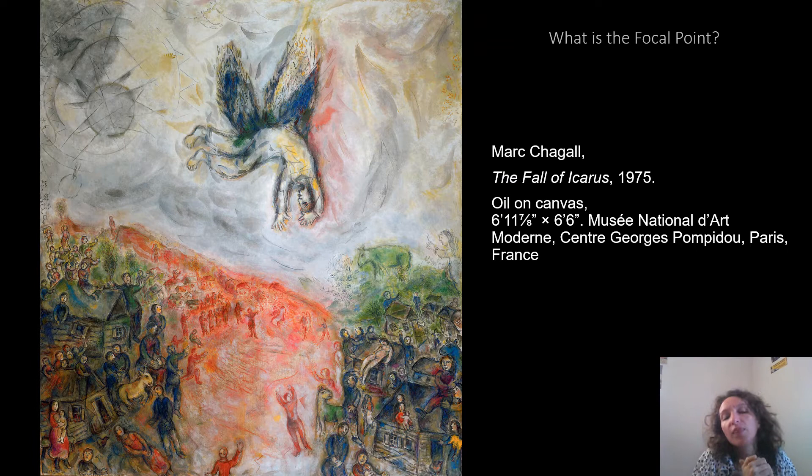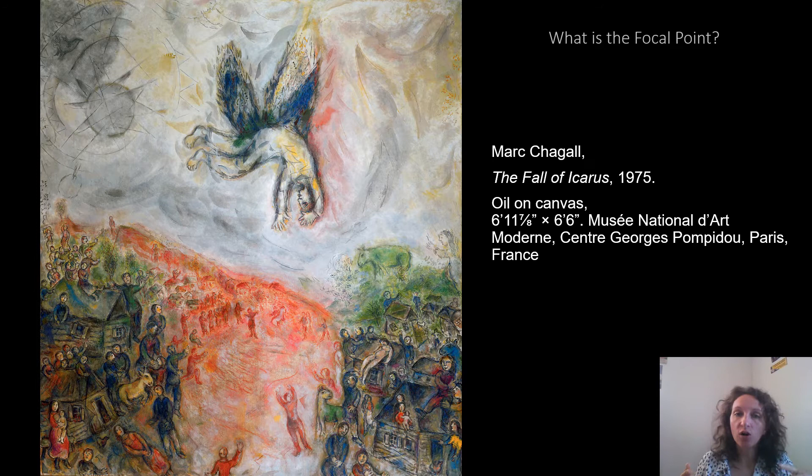So what is the focal point of this artwork? What's the area that your eye just cannot seem to look away from? This next artwork deals with a story — The Fall of Icarus. As I've said before, a lot of art history deals with storytelling or is linked to storytelling. So we're going to have a storytelling moment.